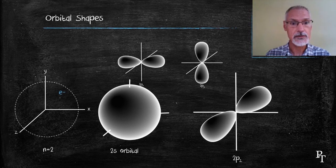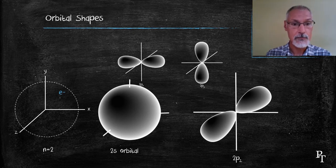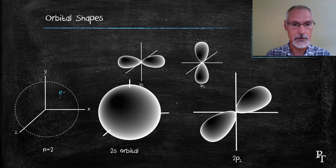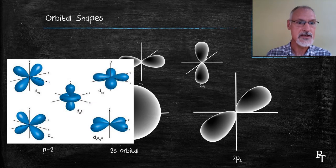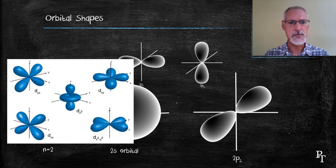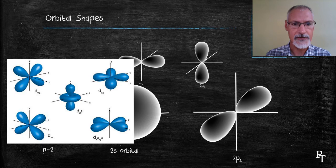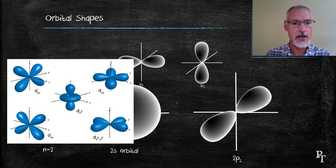So at the second energy level, we have a total of four possible orbitals where our electron could reside. When you move to the third energy level, the numbers increase. You have a spherical orbital, three possible p orbitals, and what they call d or diffuse orbitals. You're not responsible for drawing the shapes of the d orbitals, but you should have some idea of how to draw the s and the p orbitals. The important thing to understand is that as one moves further out from the nucleus to higher and higher energy levels, the number of orbitals increases, and their shape and complexity also increases.